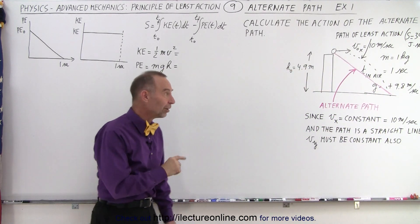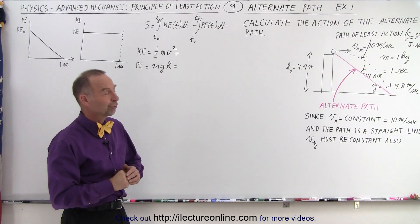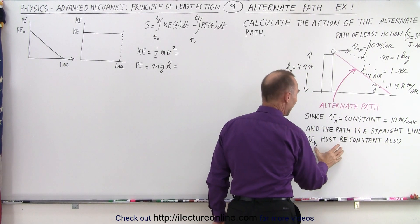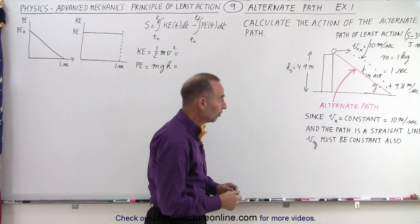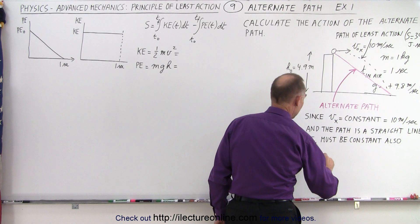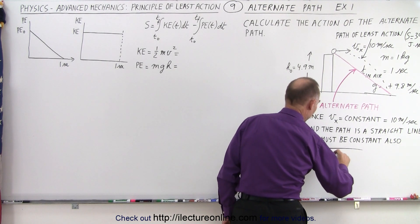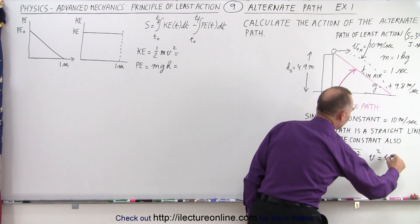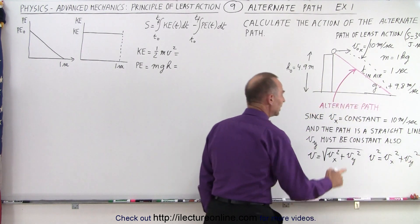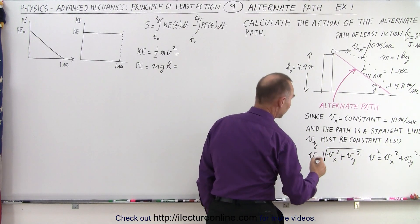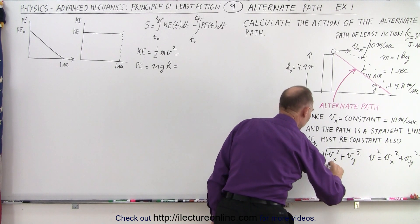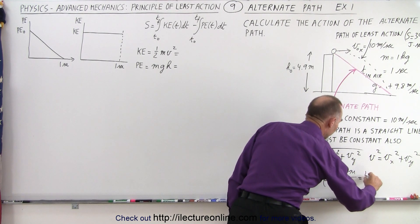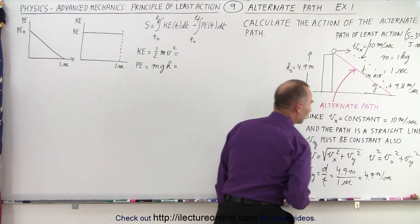Let's calculate the action of that alternate path to see if it's bigger or smaller than 34 joules times seconds. The velocity in the x direction is constant, and since the path is a straight line, v sub y must also be constant. The total velocity squared is v sub x squared plus v sub y squared, which we need for kinetic energy. We find v sub y by taking the distance over time — the distance is 4.9 meters and the time is one second — so v sub y is 4.9 meters per second in a downward direction.